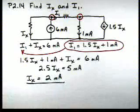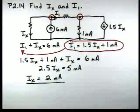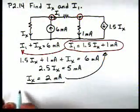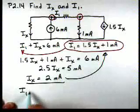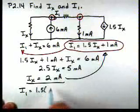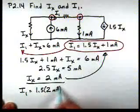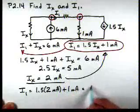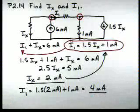Okay, so there's the value of Ix. Now, for I1, we can now substitute this back into this equation. So I1, then, is 1.5 times 2 milliamps plus 1 milliamp. And that's going to give us a value of 4 milliamps.